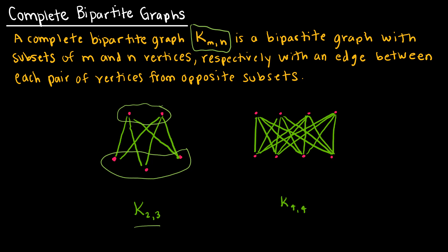That's what makes it complete. K_{4,4} has four vertices in each subset — each of the four in one set is connected to each of the four in the other set, but none of the vertices within the same set are connected to one another.